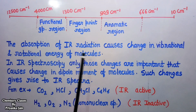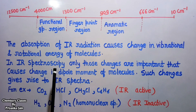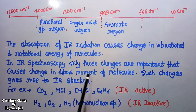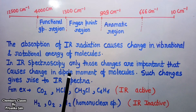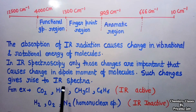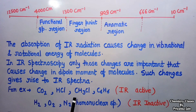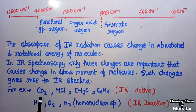The absorption of IR radiation causes changes in the vibrational and rotational energy of the molecule. In IR spectroscopy, only those changes are important which cause changes in the dipole moment of the molecule — a molecule absorbs IR radiation only when the absorption causes a change in its dipole moment. Such changes give rise to the IR spectra, and such molecules are known as IR active molecules. For example, CO₂, HCl, CH₃Cl, and benzene are all heteronuclear species with different atoms, so absorption of IR radiation changes their dipole moment, making them IR active.